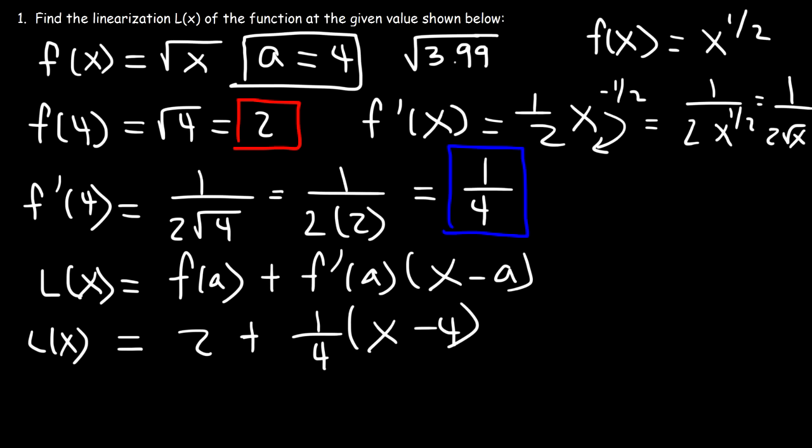So, that is the linearization function. And, you could simplify it if you want to. But, when estimating this number, I'm going to use this form. Now, if you want to simplify it, this is what you're going to get. It's going to be 2 plus 1/4 x, and then 1/4 times negative 4, that's going to be negative 1. And, so, 2 minus 1 is 1. So, it's going to be 1 plus 1/4 x. So, that's the simplified version of L(x).